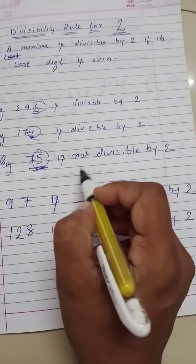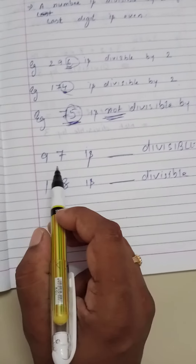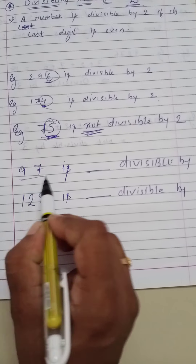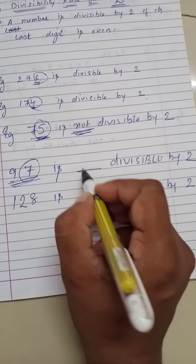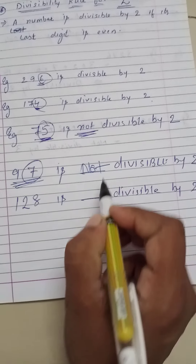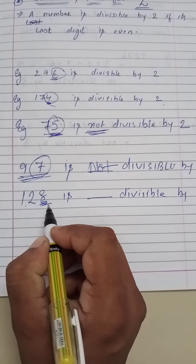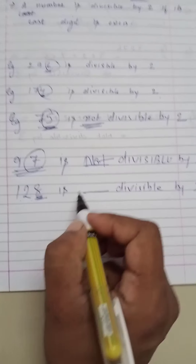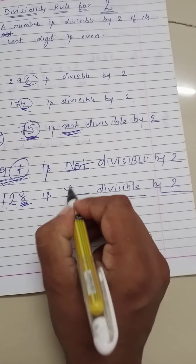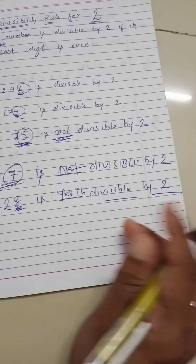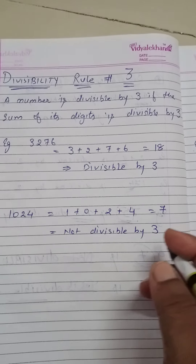On the other hand, if we take 75, the last digit is 5 which is not an even number, so this number is not divisible by 2. Similarly, 97 has an odd last digit, so it is not divisible by 2. Whereas 128 — since 8 is an even number, 128 is divisible by 2.